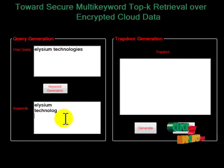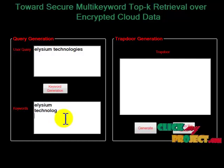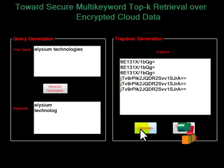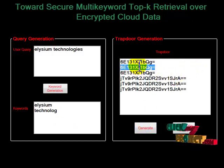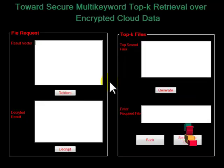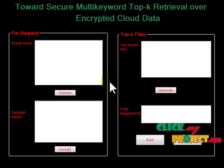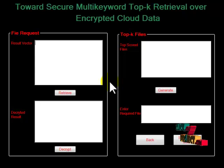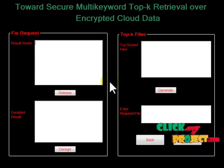The keywords are generated from the query. Then the trapdoor is generated — the encrypted query keyword is known as the trapdoor. The trapdoor is generated and sent to the cloud. The cloud server searches the search index and provides a result vector containing the related files and file names for the given user query.